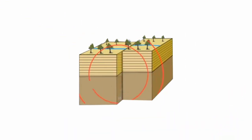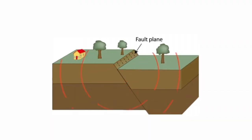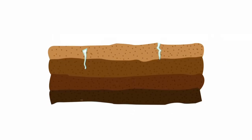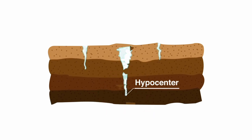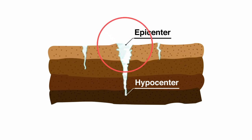When two plates of the Earth are separated, earthquakes happen. The surface where these two plates get separated is known as the fault plane or the fault. The place or the location under the Earth's surface where the earthquake begins is known as the hypocenter. The location or the space above the surface of an earthquake is known as the epicenter.